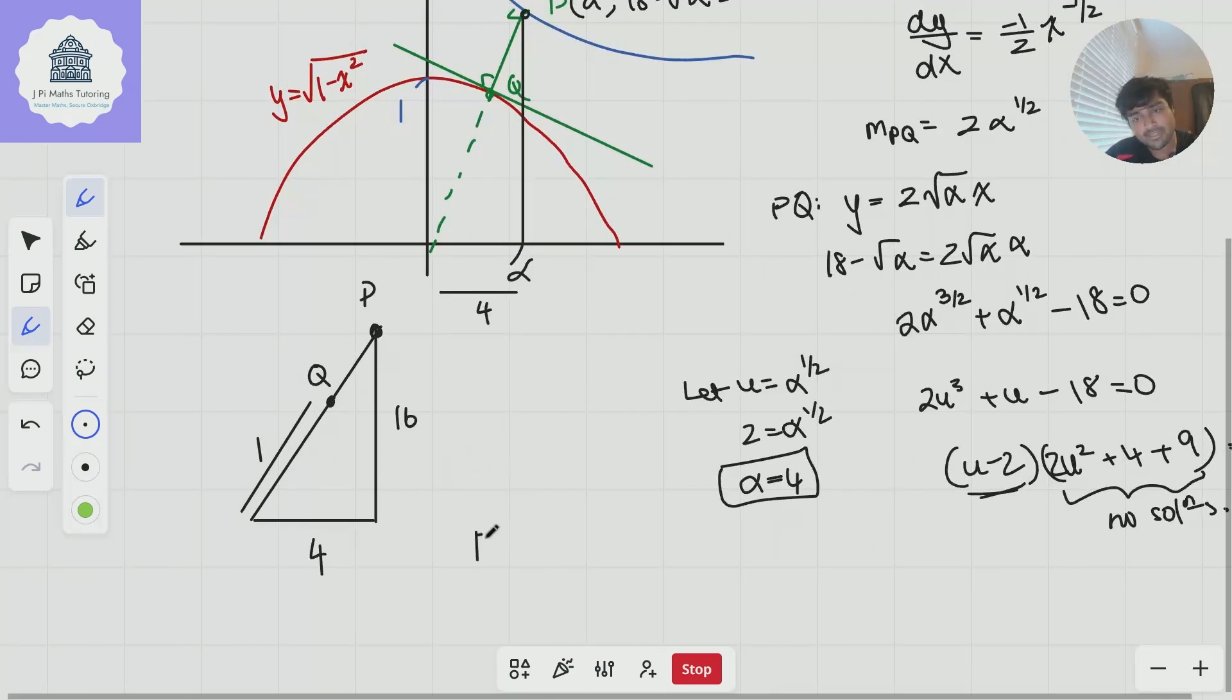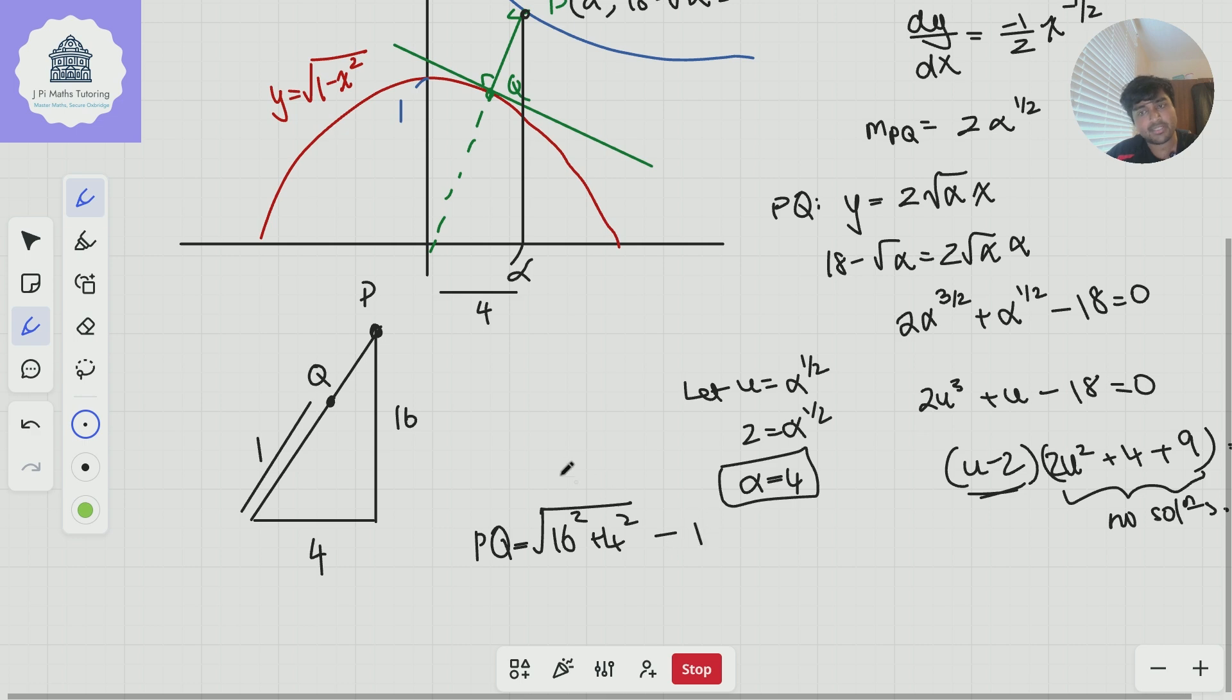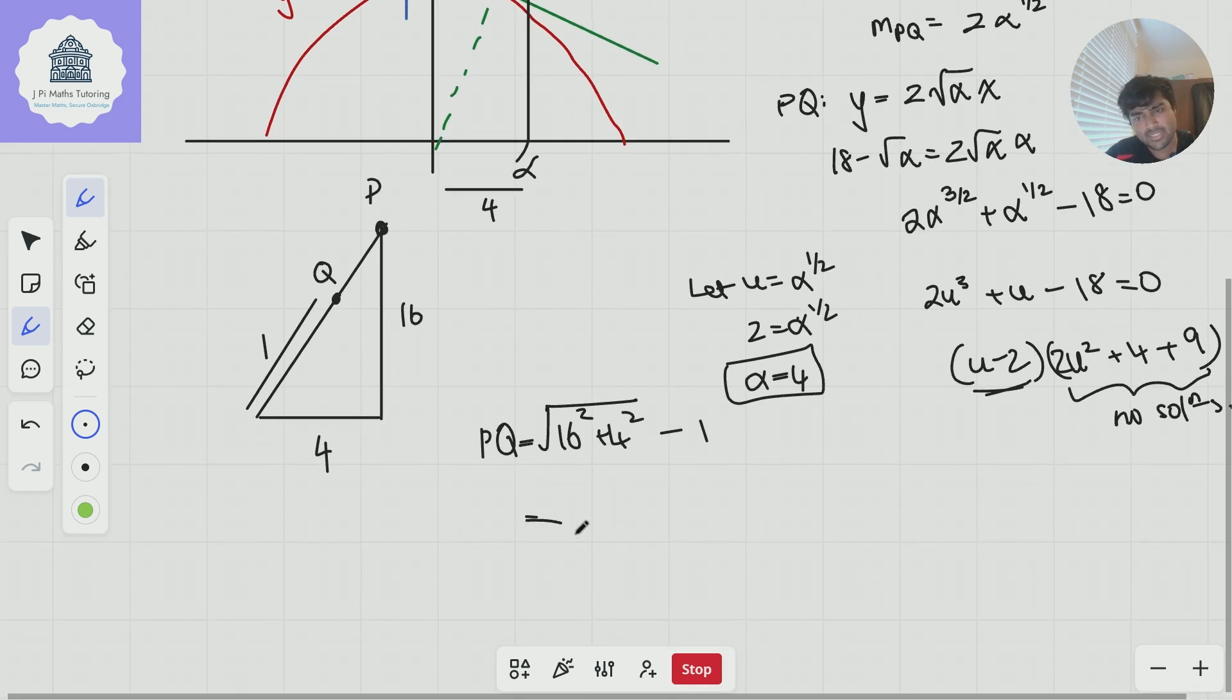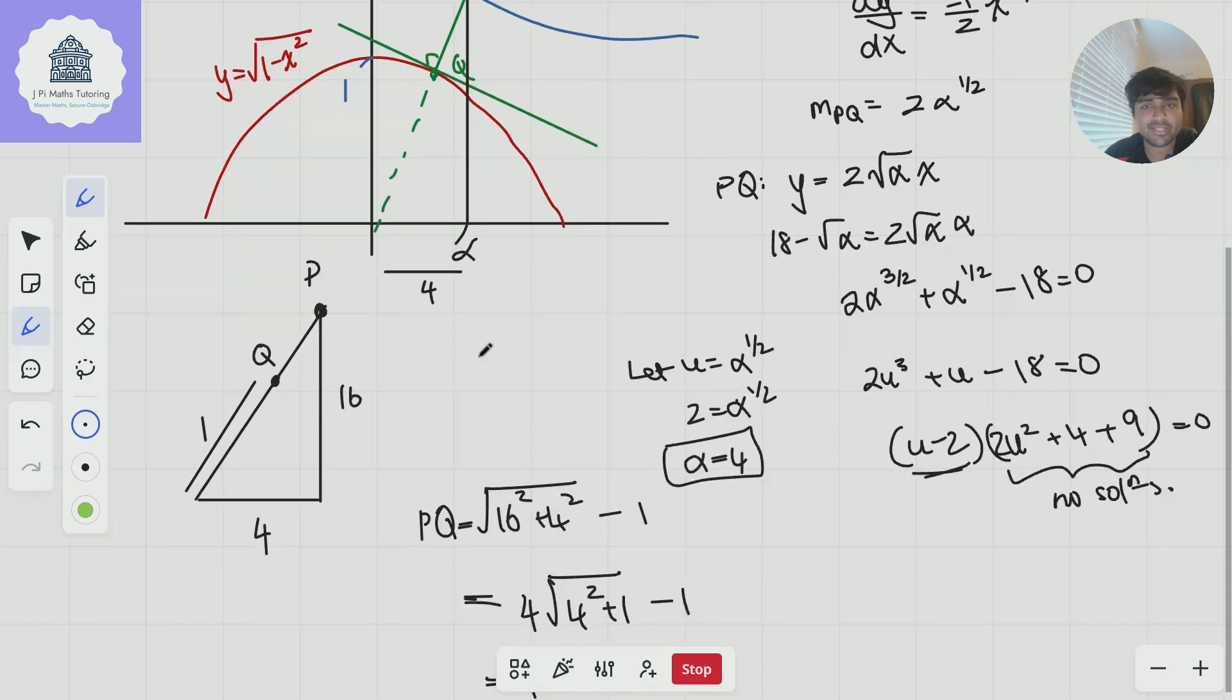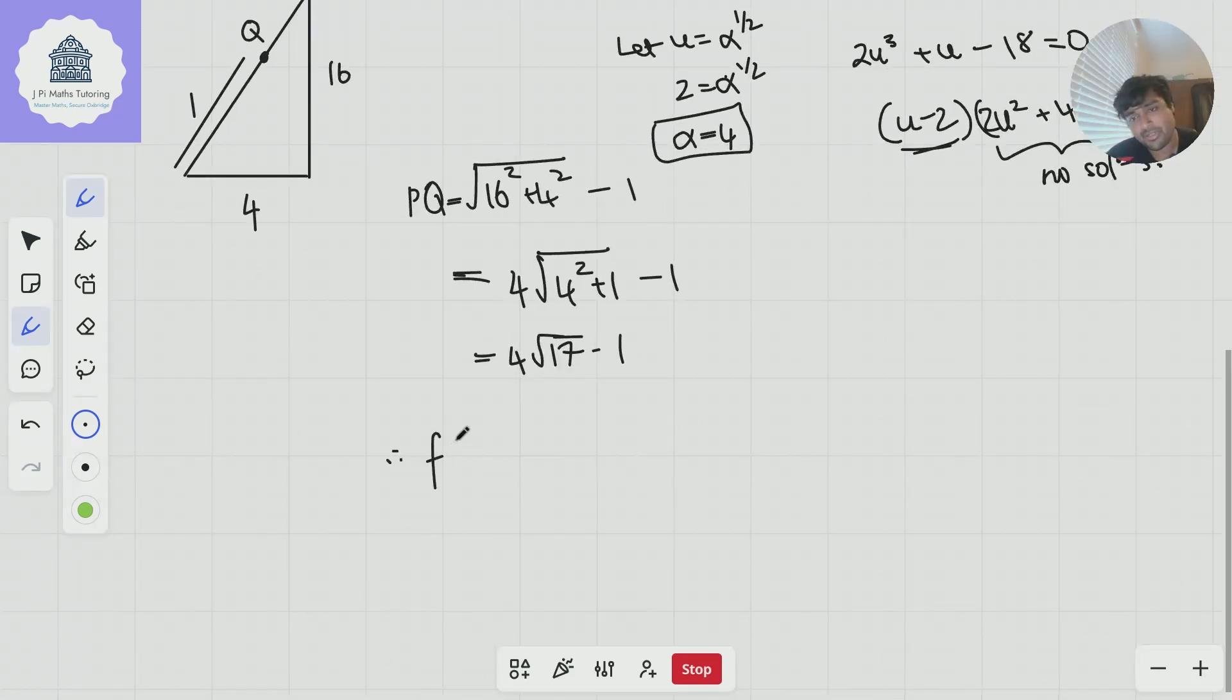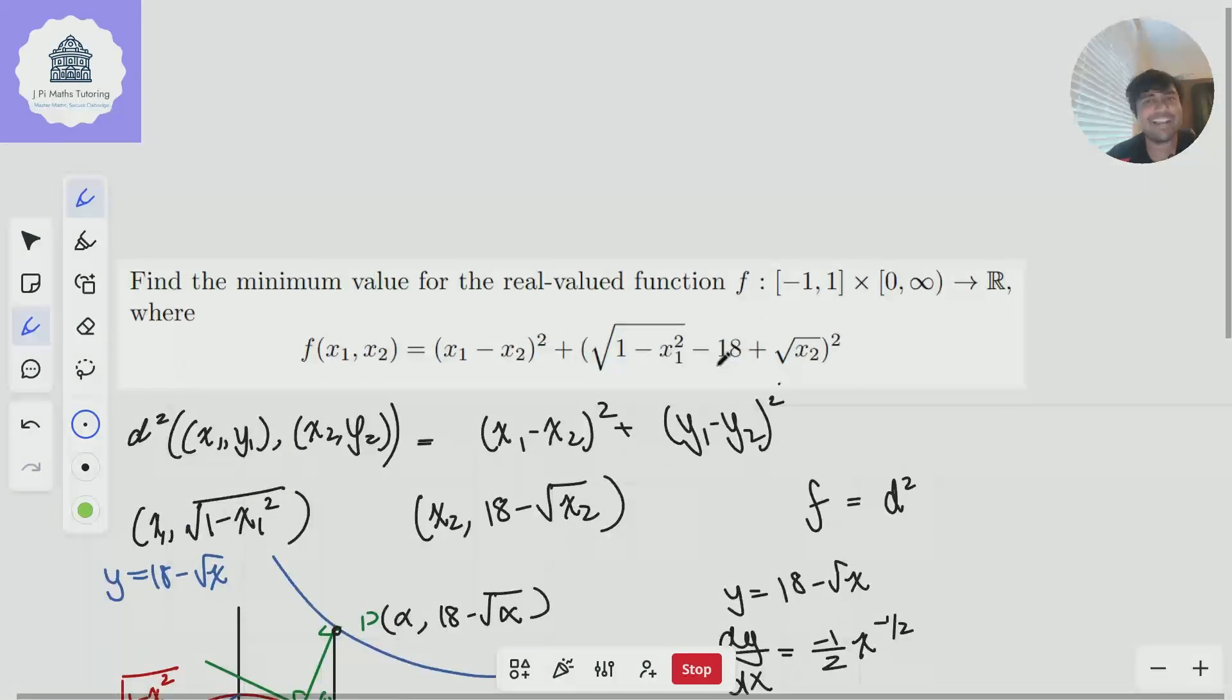What do we know about this length? Well, if we come back up to P, its y value is 18 minus √α. And we know that alpha is four. So that's just going to have height 16. And so we're just interested in PQ. Well, we can use Pythagoras's theorem to help us. The length PQ is simply going to be the square root of 16² plus 4² minus one. So the square root of 16² plus 4² is going to be the hypotenuse. And of course, then we're subtracting one. What is this equal to? Well, I can take out a factor of four, and then I'm left with 4² plus 1 minus one. And so this is going to be 4√17 minus 1. So that is the length PQ, the shortest distance between these two curves. And so therefore, f or the minimum value of f, which I'll maybe call f_min, which is equal to d² is just (4√17 - 1)². And if you wanted to, you could expand and simplify that. And that would give you the minimum value of this bizarre function that we had to begin with.